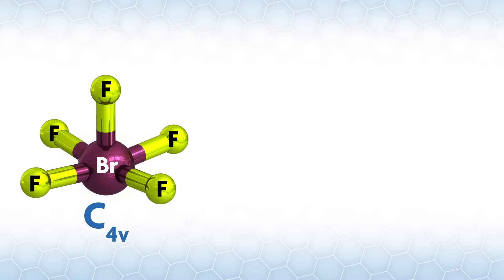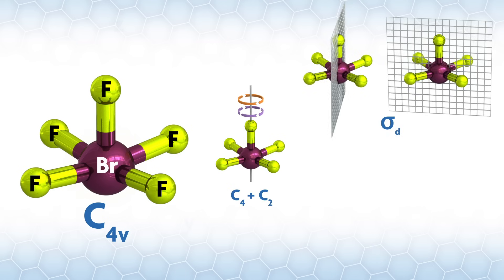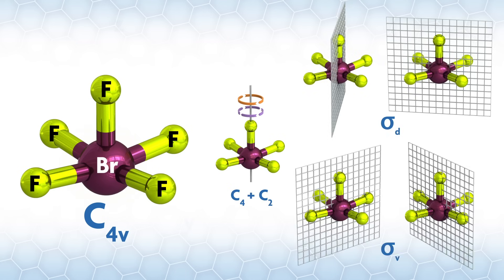For example, bromine pentafluoride is C4v with C4 axes, a C2, two sigma d's, and two sigma v planes, and all those symmetry operations go through the bromine.